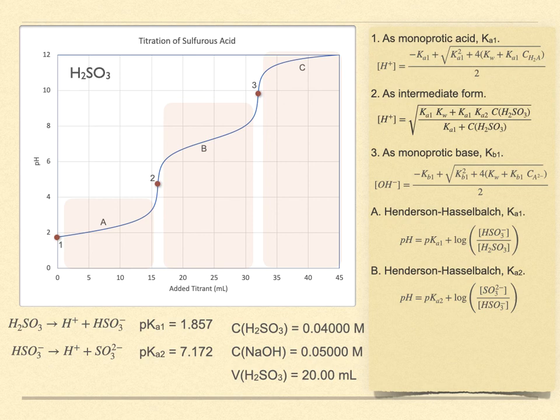The last region is beyond the second equivalence point. Here, we are now just treating the solution as being that of the titrant added in excess of that needed to complete the titration. And we also have to remember to account for the dilution of the original titrant concentration. Remember, it's the titrant concentration that you're working with now, not the original formal acid concentration.